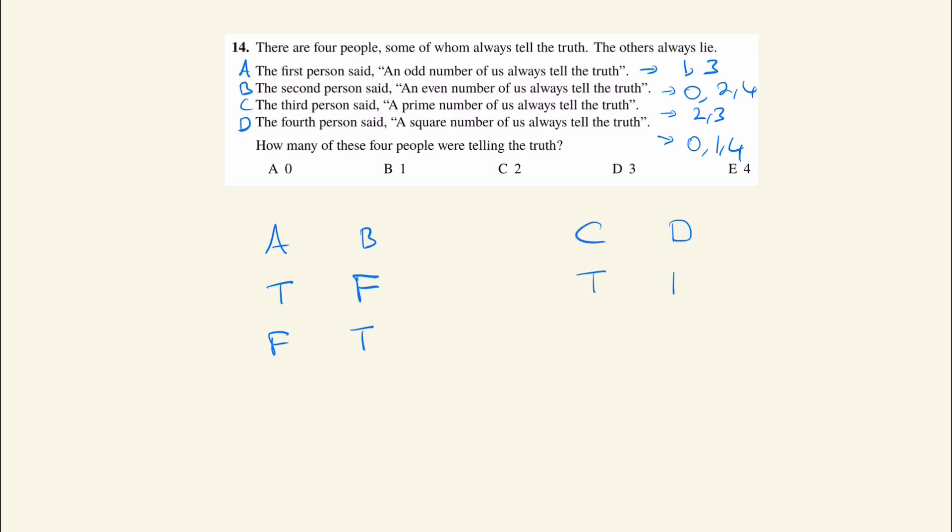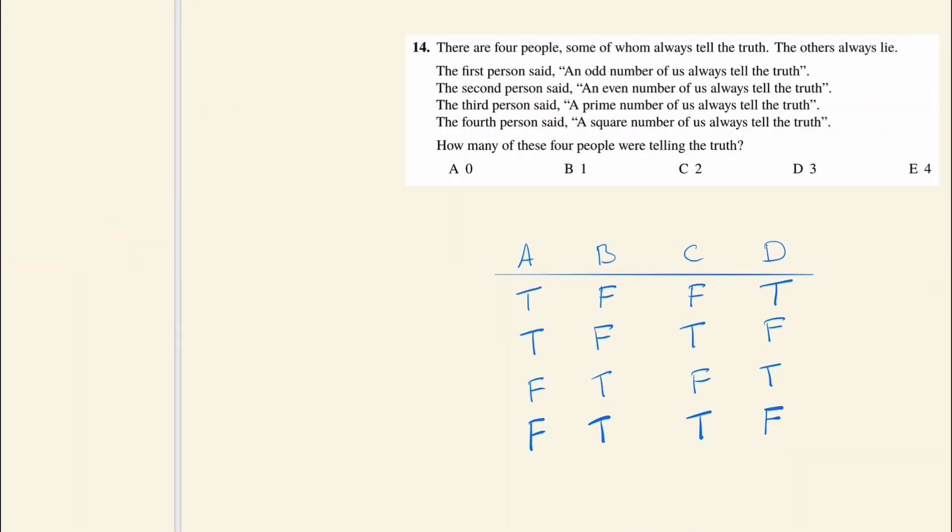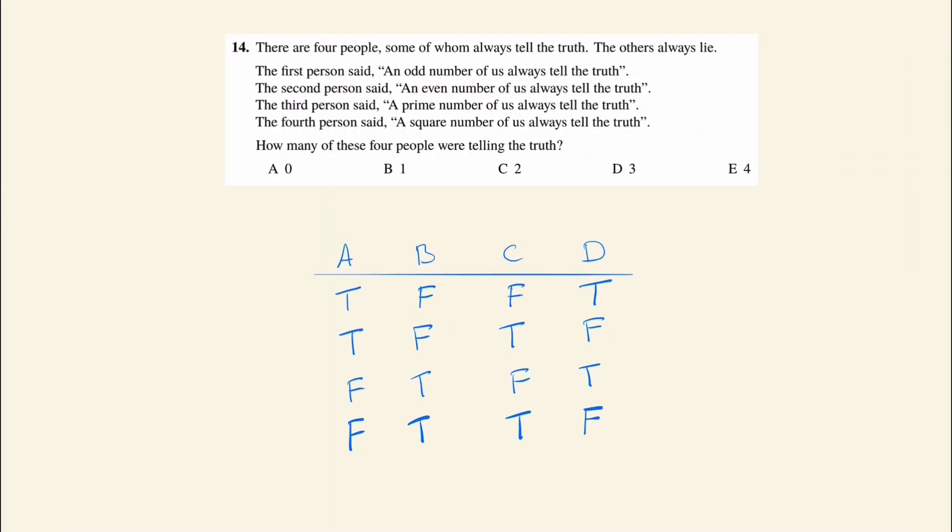If C were telling a lie, D would be telling the truth. So what we end up with is a truth table that looks like this. Either way, we always have at least two people telling the truth.